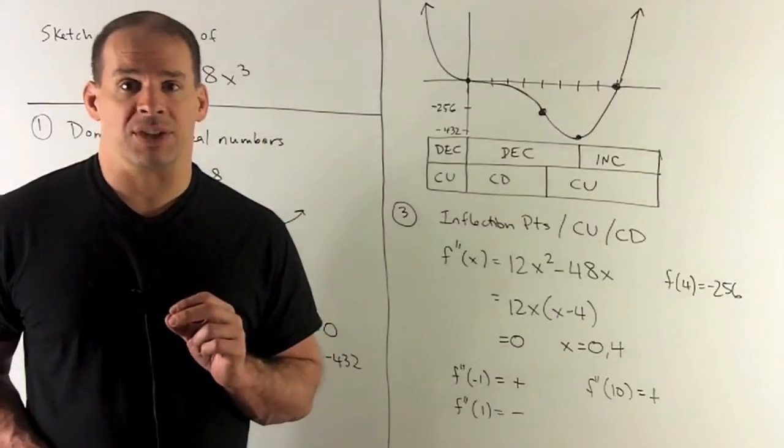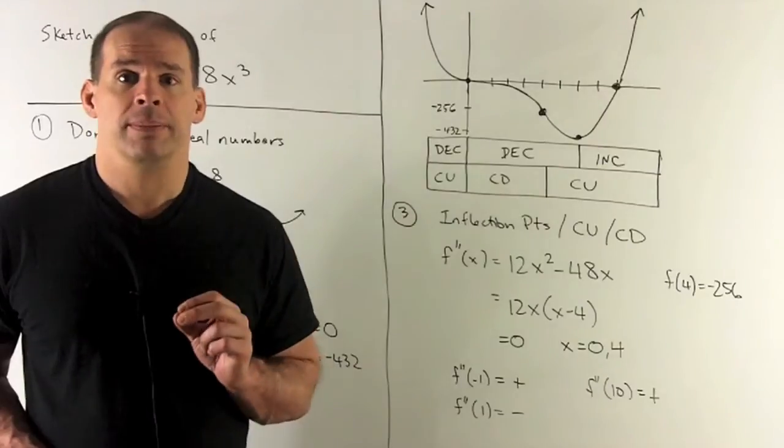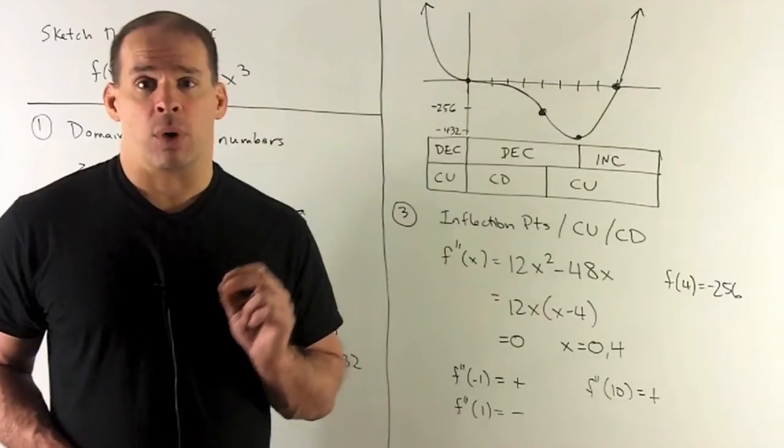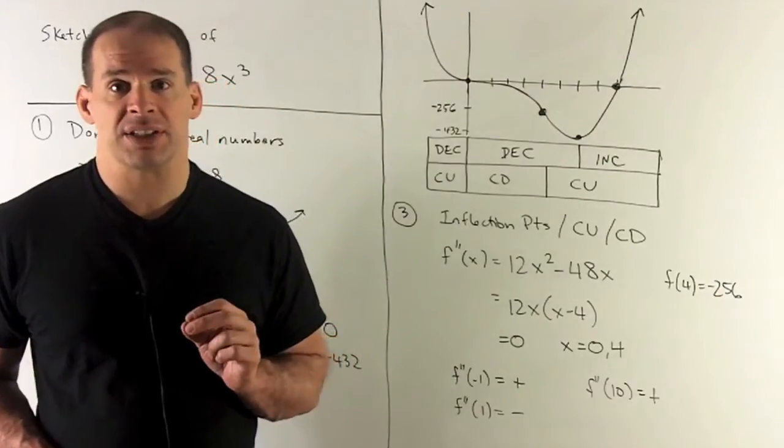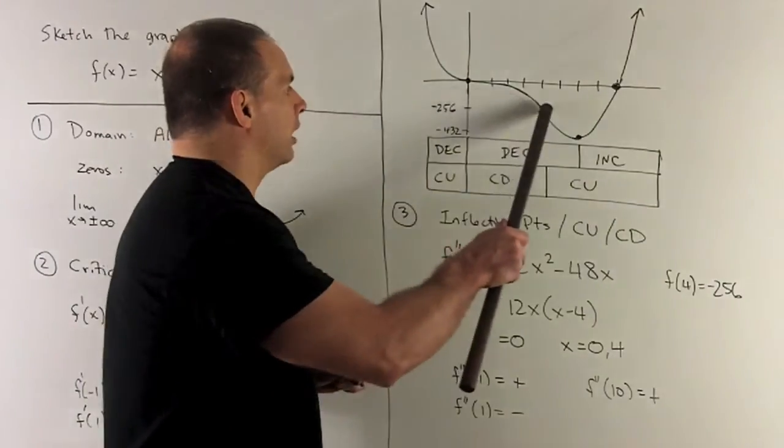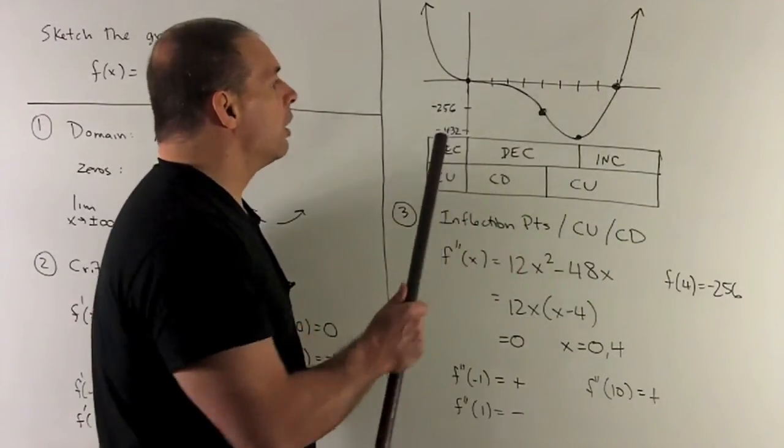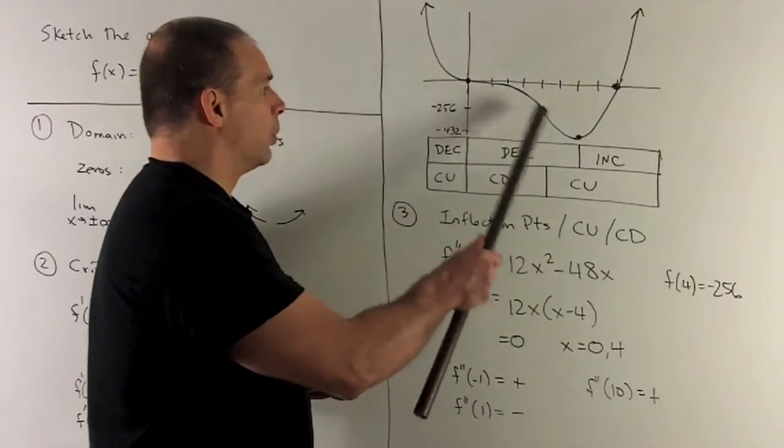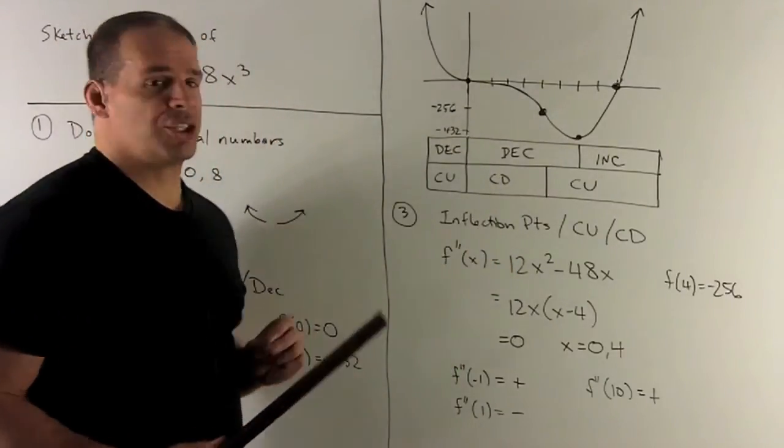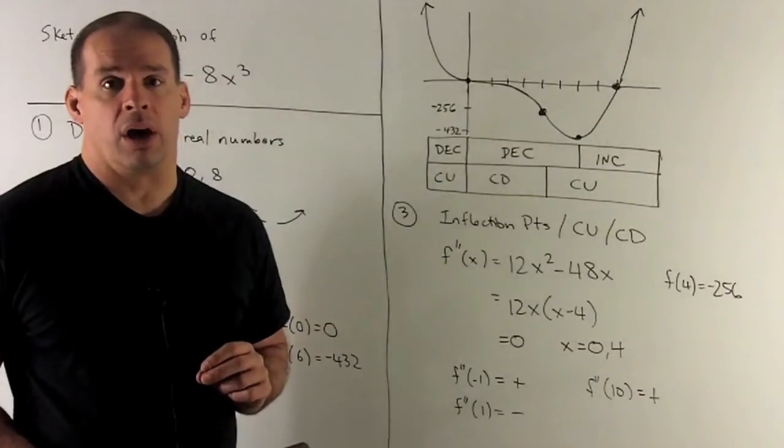We have a new point at x = 4, so we plot it. I put 4 back into the original function, that's going to give me f(4) = -256. We plot that point right here. Again, we're not to scale, but we want our two points here to be relative to one another in the right spots. That's pretty much a good guess of where it might go.